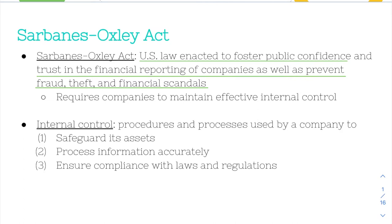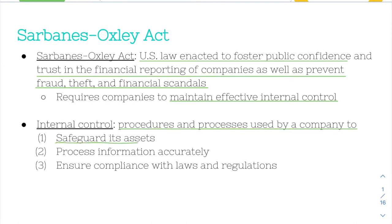Sarbanes-Oxley requires companies to maintain what's called effective internal control, to make sure companies are accurately reporting their financial statements and that management is sound and trustworthy. A more thorough definition of internal control is the procedures and processes used by a company to: first, safeguard its assets; second, process information accurately; and third, ensure compliance with laws and regulations. That is what Sarbanes-Oxley is trying to promote — effective internal control.